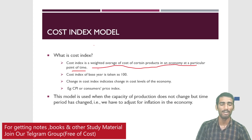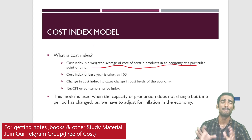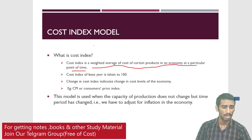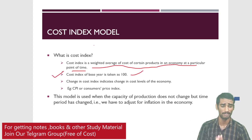Now, the cost index for the base year is generally considered as 100. This is a very important point to remember — sometimes a single-mark question comes asking what the cost index for the base year is. The answer is 100.